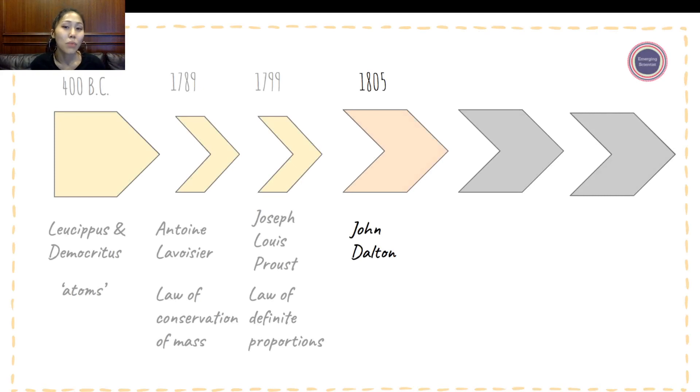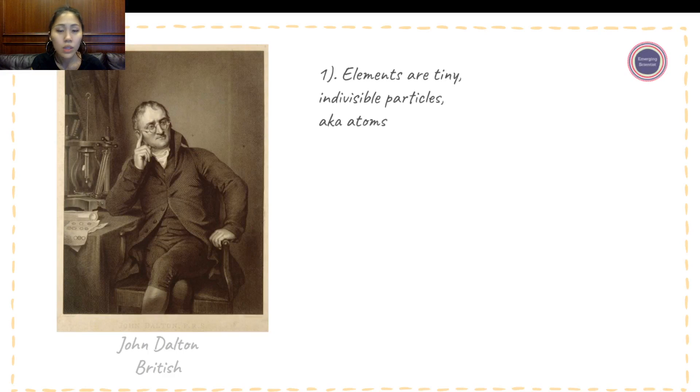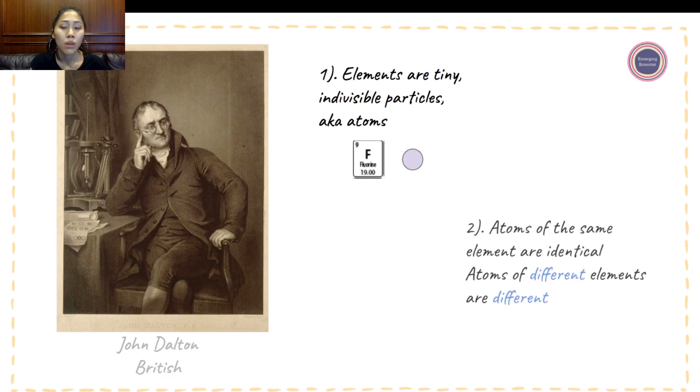John Dalton came up in 1805 with the concept of atomic theory. There are four different parts to the atomic theory. This British scientist came up with the first part that elements are tiny indivisible particles, aka atoms. Atoms of the same element are identical. Atoms of different elements are different.